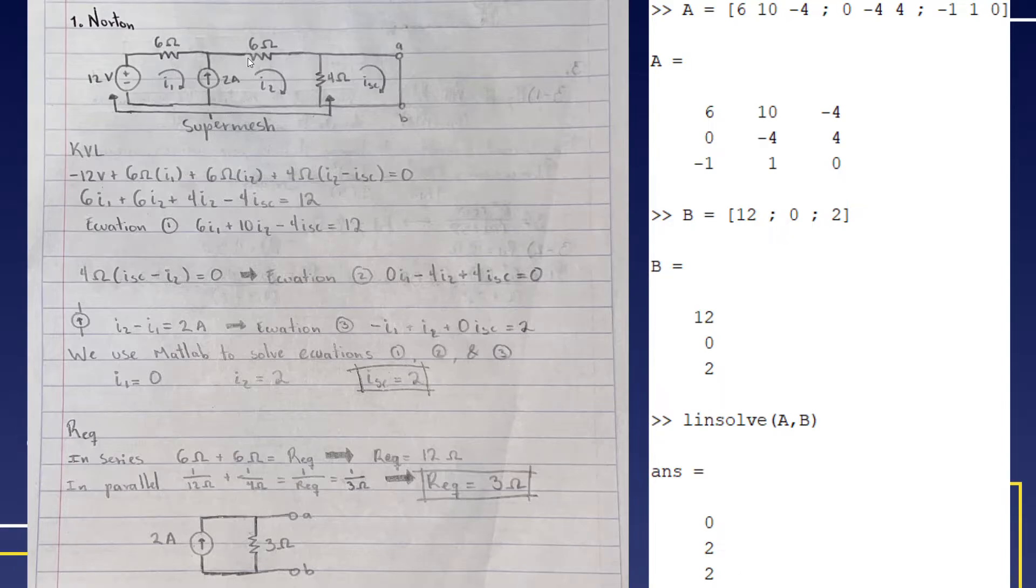Lastly, to solve this problem we have to calculate our equivalent resistor. We have to sum the ones in parallel, and at the end we have that our equivalent resistor will be 3 ohms.